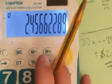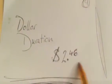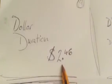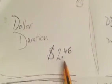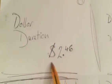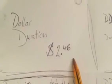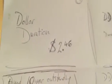and we round it to $2.46. So if this bond's yield increases or decreases by 25 basis points, the average change in value is going to be $2.46.